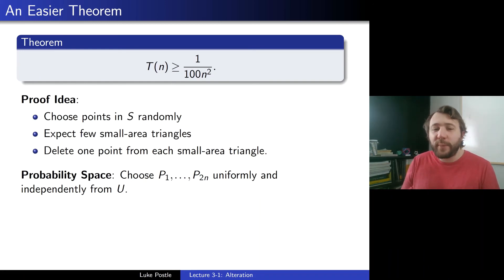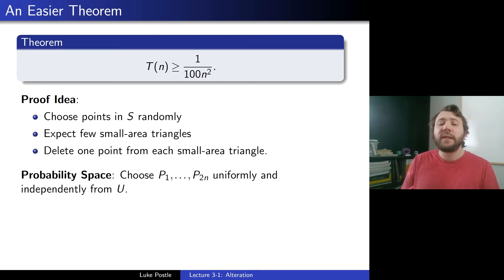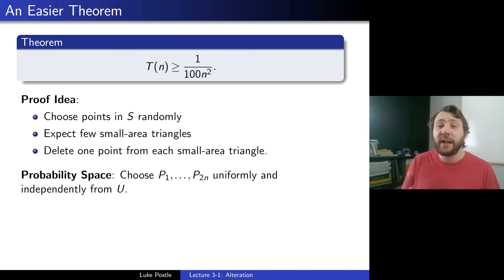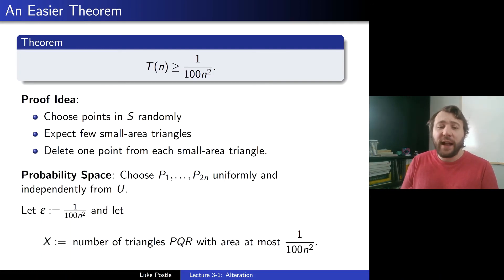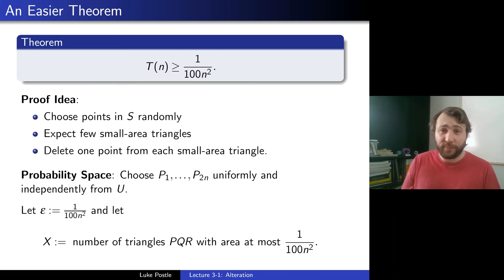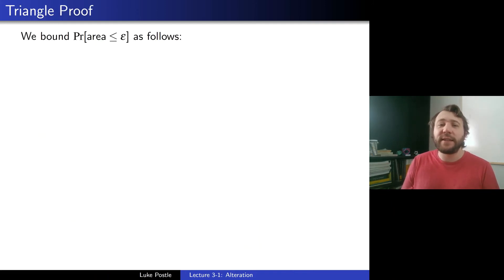For the formal proof, we choose 2n points uniformly and independently from the unit square — using 2n because we'll delete roughly n points. Let ε equal 1 over 100n squared, the area threshold we want to avoid. Let X be the number of triangles PQR with area at most 1 over 100n squared. We need to bound the probability that the area of a given triangle is at most ε, which requires some geometry.